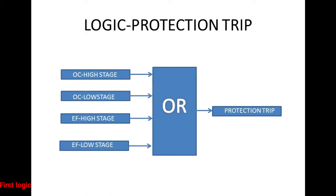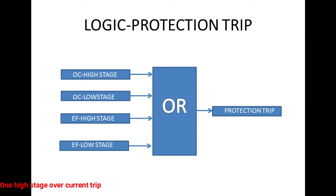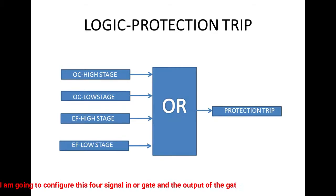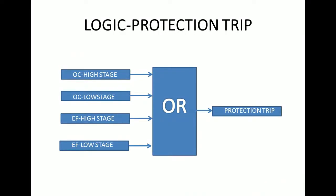The first logic is production trip. I have taken 4 production trip signals: one high stage over current trip, another one low stage over current trip, third one is high stage earth fault trip, and the last one is low stage earth fault. I am going to configure these 4 signals in an OR gate, and the output of the gate is given to the production trip.